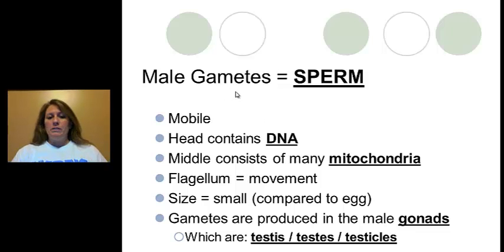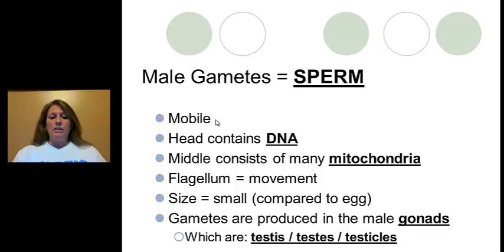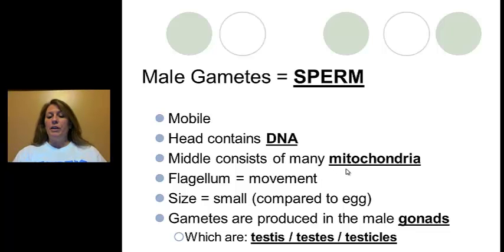The male gametes are called sperm. Compared to the female egg, sperm is mobile because it has a flagellum. The head of the sperm contains the DNA, which consists of 23 chromosomes produced during meiosis when haploid cells were made. The middle piece, or mid-piece, contains mitochondria which provides energy in the form of ATP in order to move the flagellum.